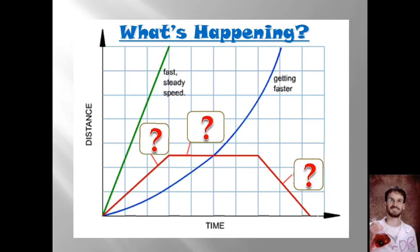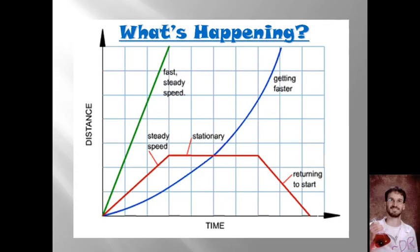The red line has some changes going on. In the beginning, it's moving away from a reference point at a nice steady speed, and then it stops, and then it moves back towards the reference point at a steady speed. And if we look at the slopes, it's moving back towards the reference point slightly faster than it was moving away from the reference point.